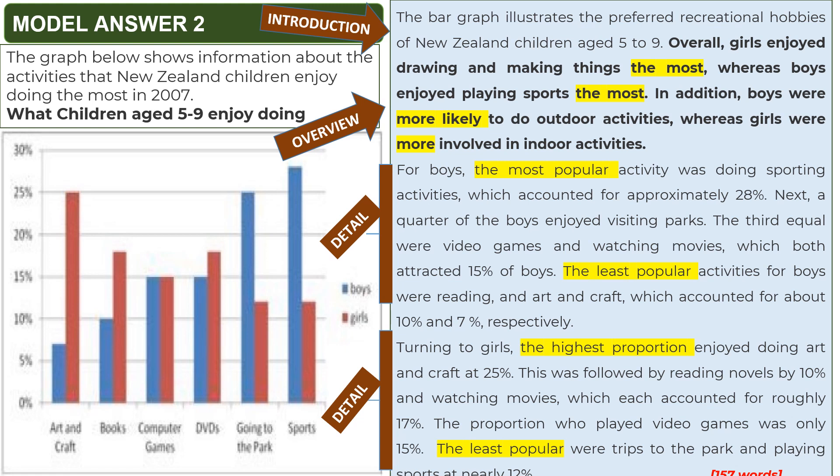Now let's write the overview. When you write the overview here, you will say overall who does the activity the most and who does it the least — you will not say increase or decrease. When you look at the chart, the girls do art and craft the most and boys do sports the most. Red is for girls and blue is for boys. Which activity do most girls like? Arts and crafts — drawing and making things. And which activity do boys like the most? Sports.